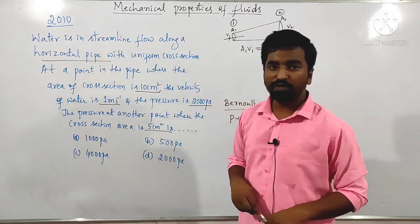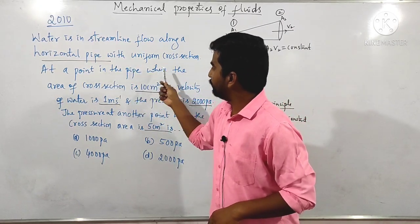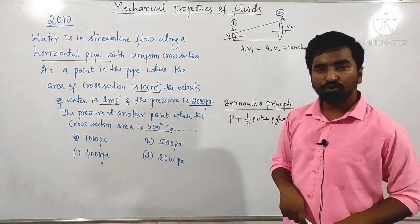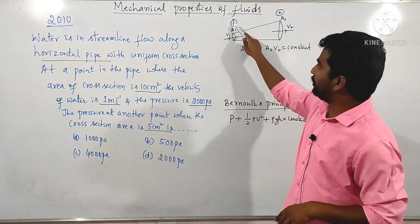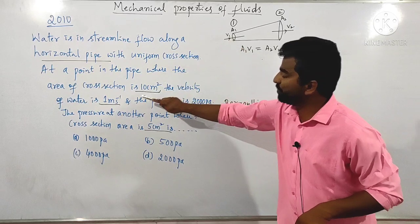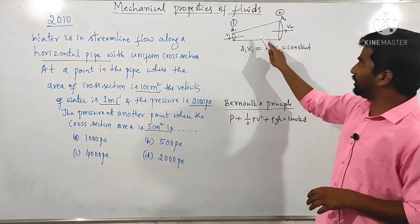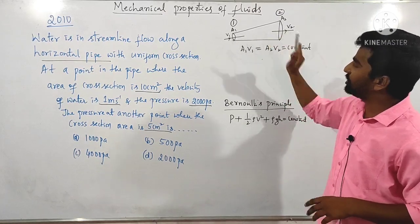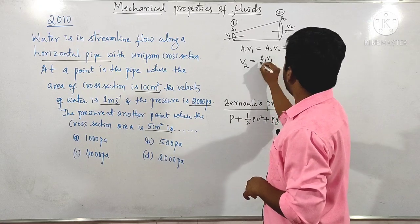Next question asked in 2010: water is in streamline flow along a horizontal pipe with uniform cross-section. At a point where the area of cross-section is 10 cm², the velocity is 1 m/s and the pressure is 2000 Pa. Find the pressure at another point where the area of cross-section is 5 cm². According to the continuity equation, A₁V₁ = A₂V₂. So V₂ = A₁V₁/A₂ = (10 × 1)/5 = 2 m/s.